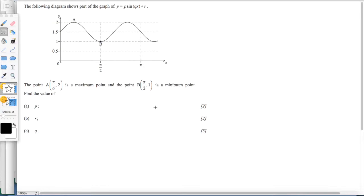This is a common type of question involving trigonometric functions, which involves getting information from the graph and finding unknowns on the equations. As you can see, it's given that the function is in the form y equals p sin qx plus r. One thing that we should notice is the maximum point a and the minimum point b here.